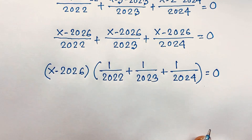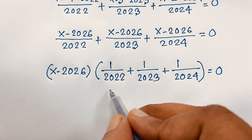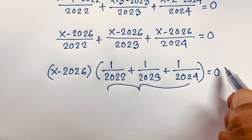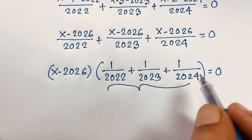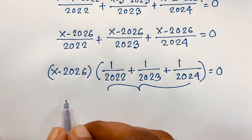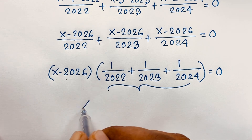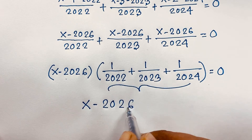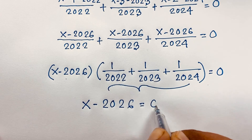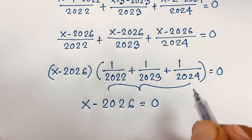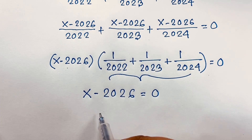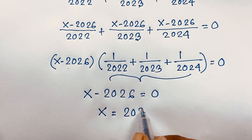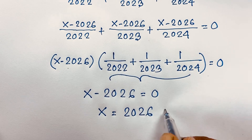Since 1 over 2022 plus 1 over 2023 plus 1 over 2024 is not equal to 0, the factor (x minus 2026) must equal 0. Therefore x equals 2026, which is our final answer.